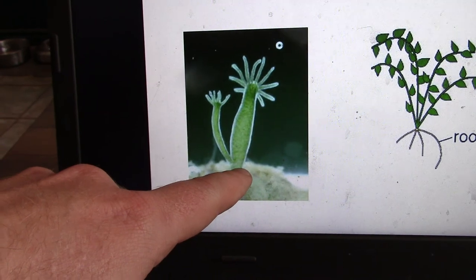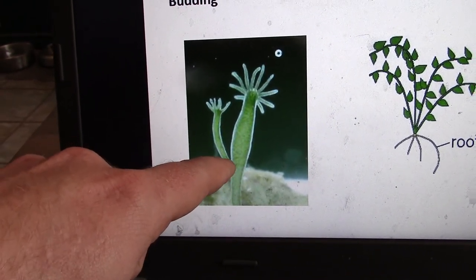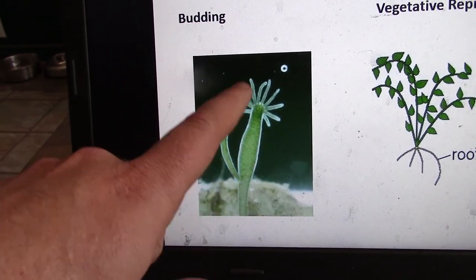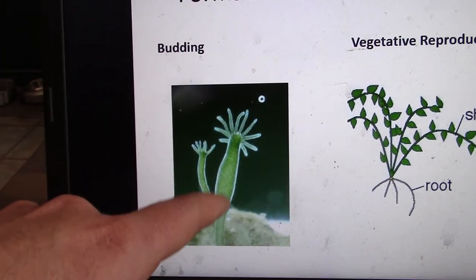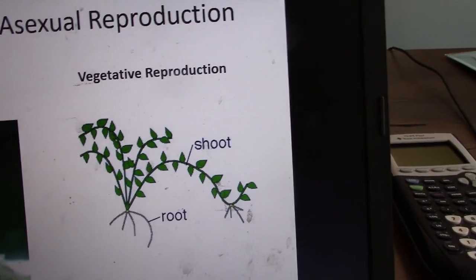With budding, the actual hydra plant clones itself, and a little hydra plant grows out of it. It's a complete clone. It's like a little you grew out of you. That would be weird. That's what happens in hydra plants.